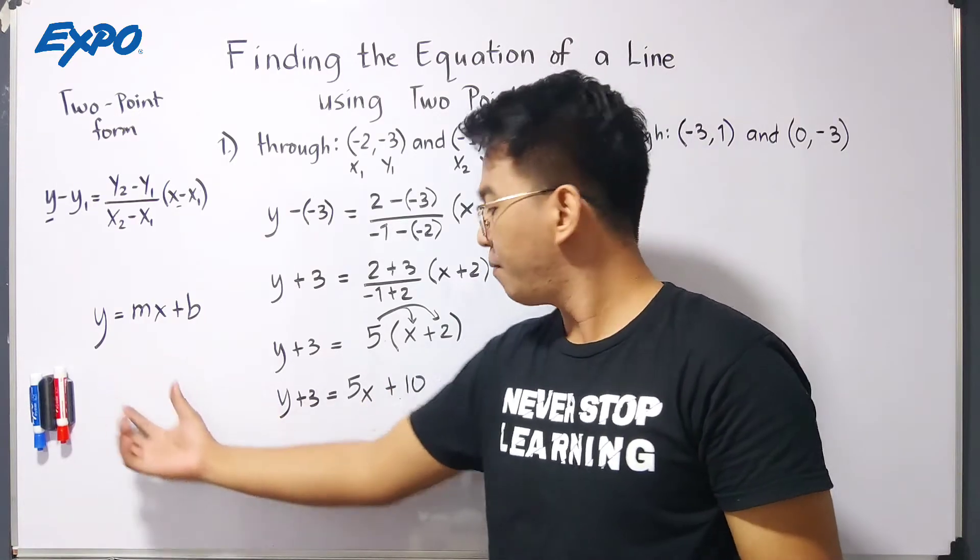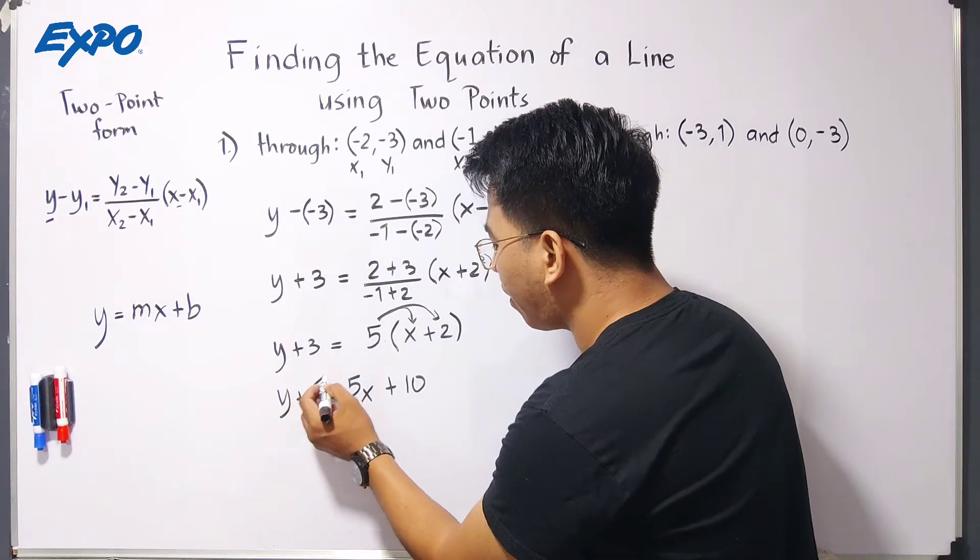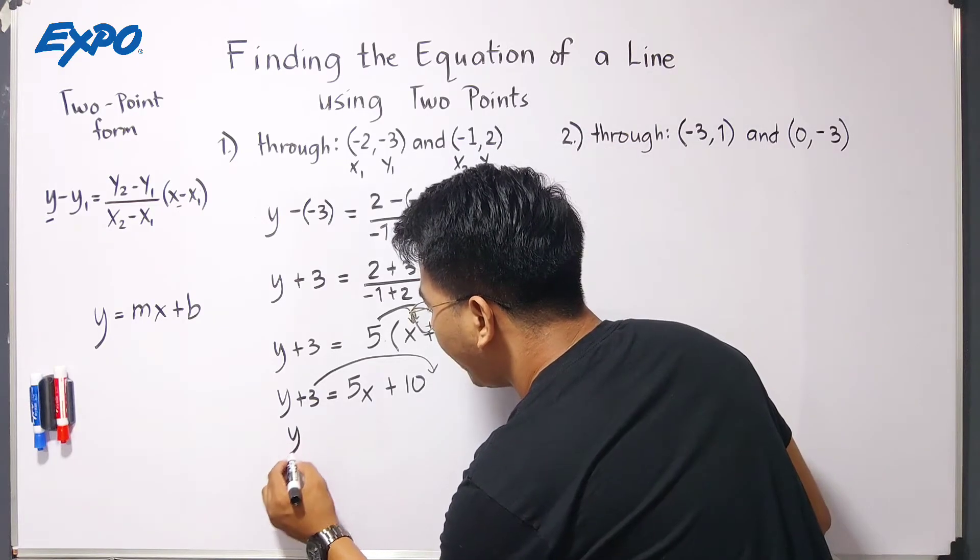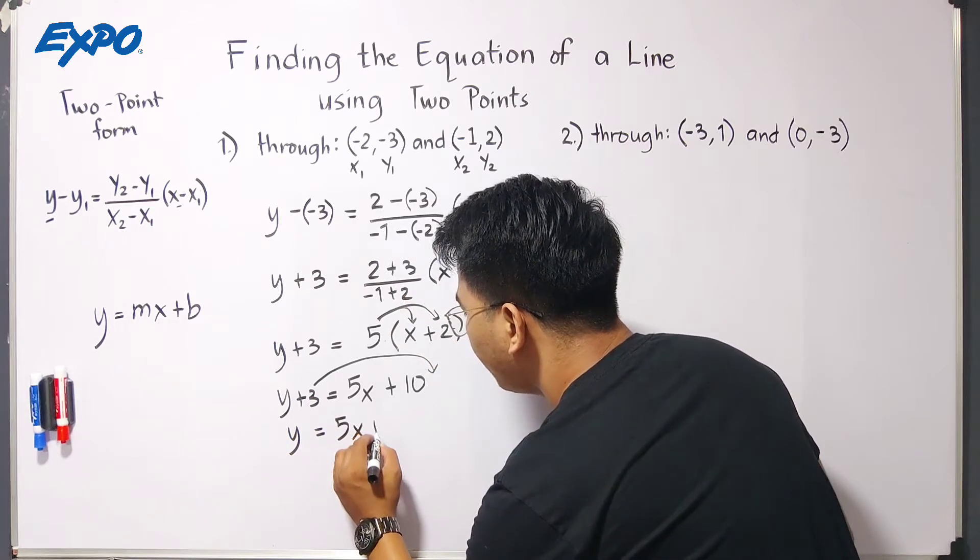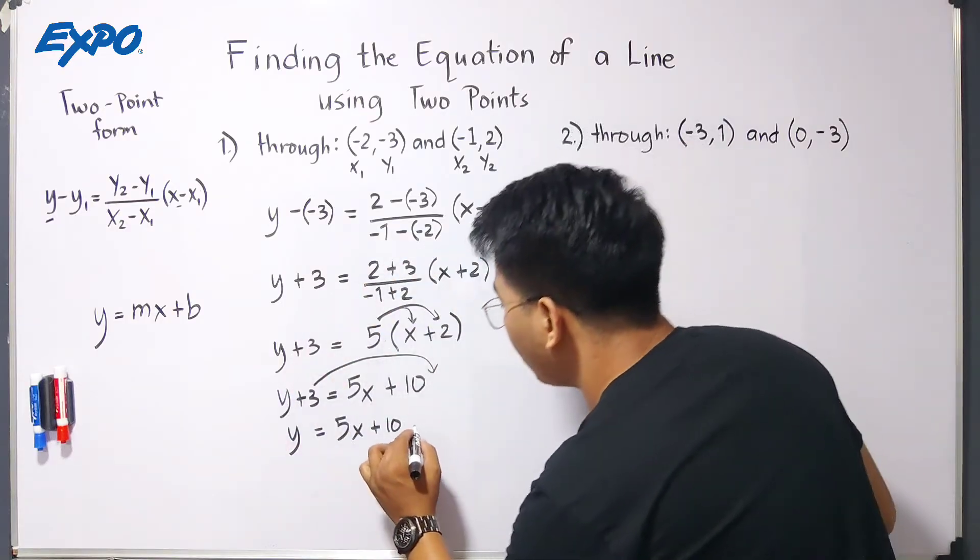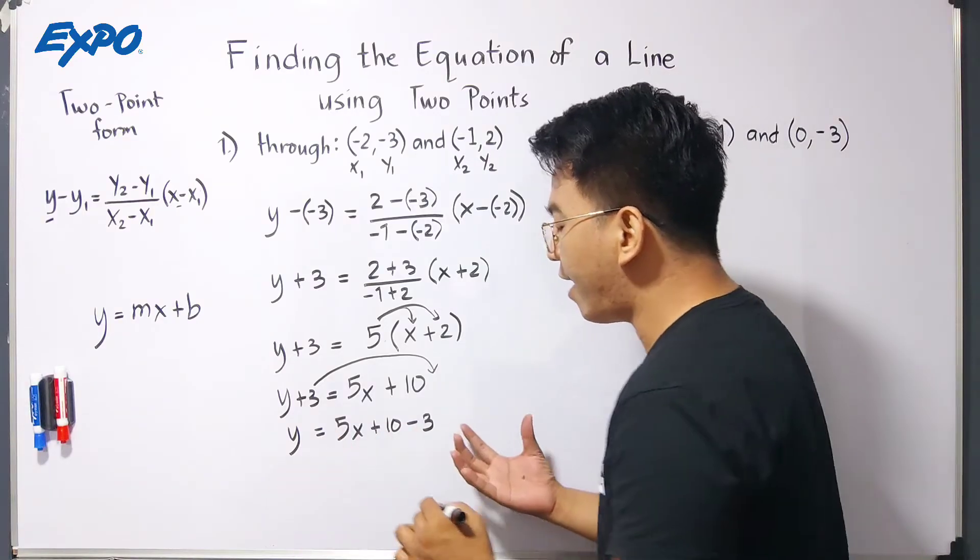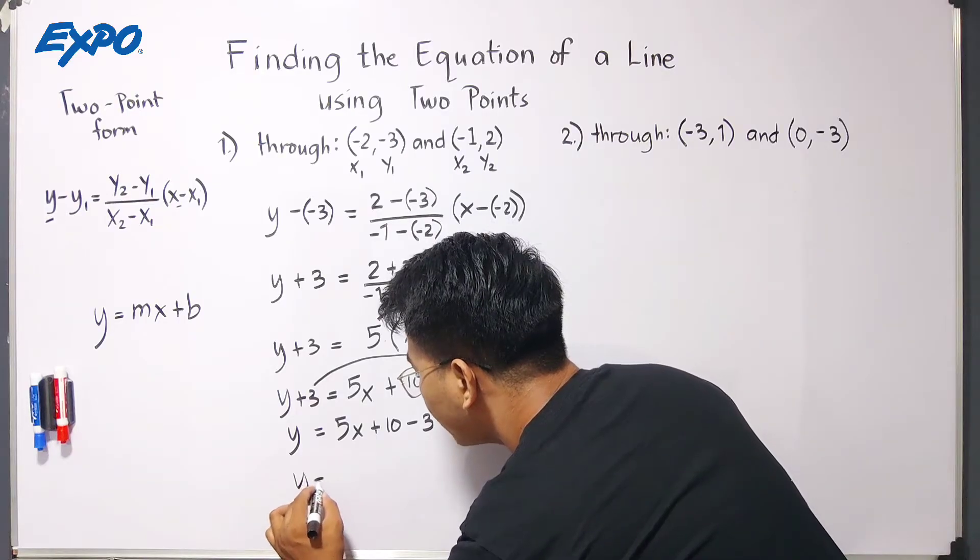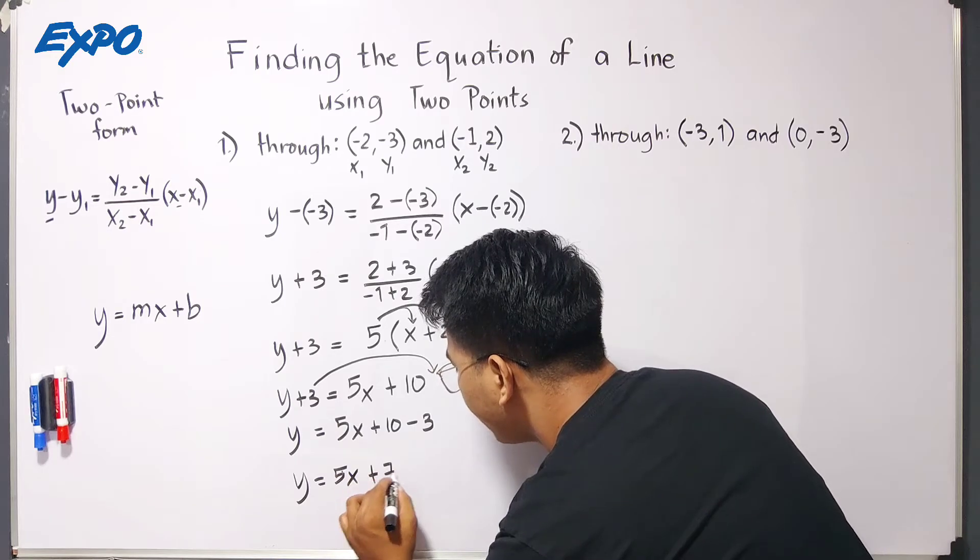Now, for us to achieve this, we need to move the positive 3 to the other side. So, to make it quick, we will do transposition method. So, we can have y. We have y, equals 5x plus 10. Then, since this one is positive, when you transpose this to the other side, it will become negative 3. So, to finalize our answer, in this form, you have your y equals 5x plus 7.